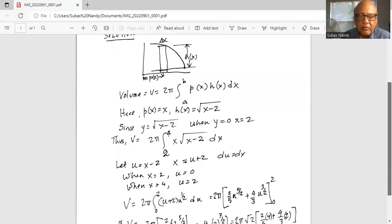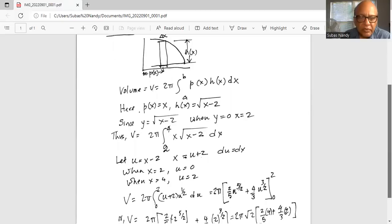So we plug it in, v is equal to 2 pi. For x we write u plus 2 and square root of x minus 2 is u to the power of half du. So the integration limits are between 0 and 2 in u.